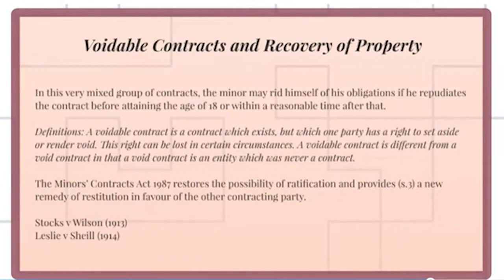Voidable Contracts: In this very mixed group of contracts, the minor may rid himself of his obligations if he repudiates the contract before attaining the age of 18 or within a reasonable time after that. What this means is that the contracts are voidable at the minor's option. A voidable contract is a contract that exists, but which one party has the right to set aside or render void. This right can be lost in certain circumstances, the most common being the intervention of a third party who has acquired rights following from the voidable contract.